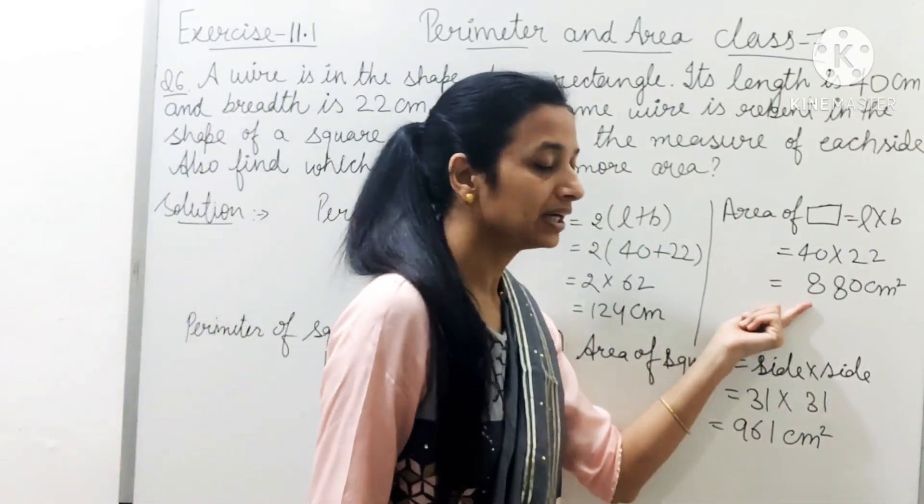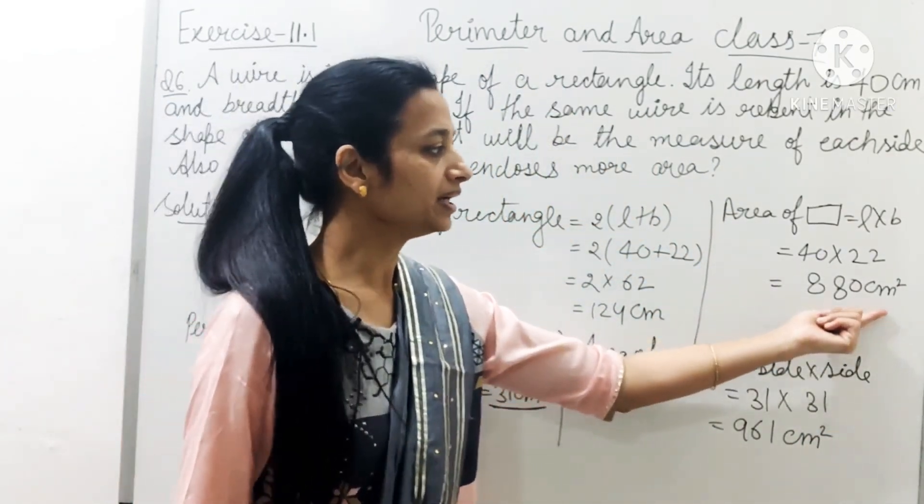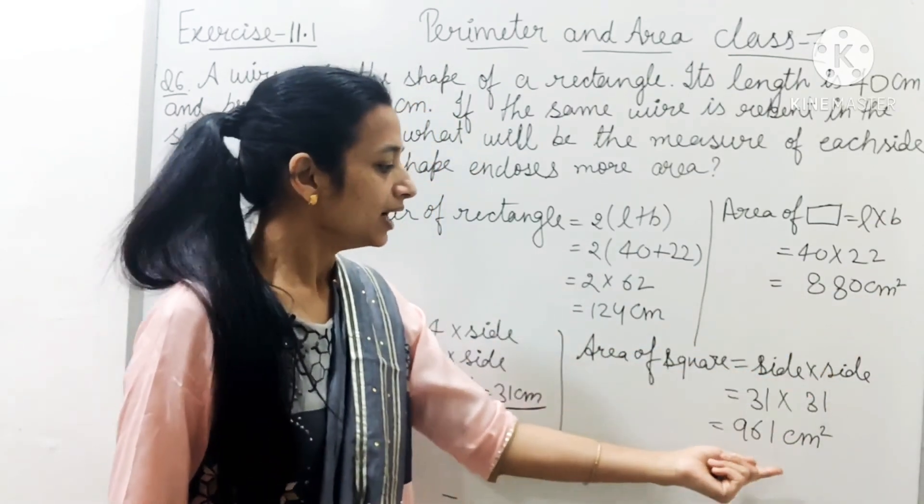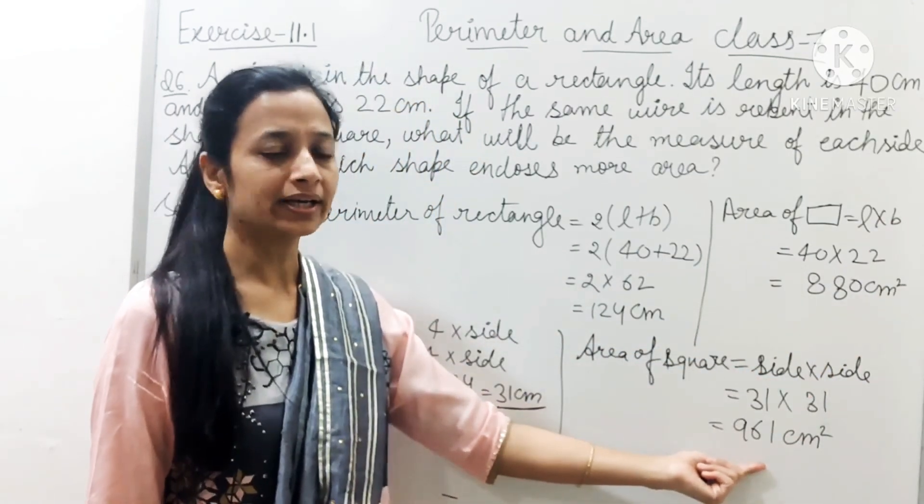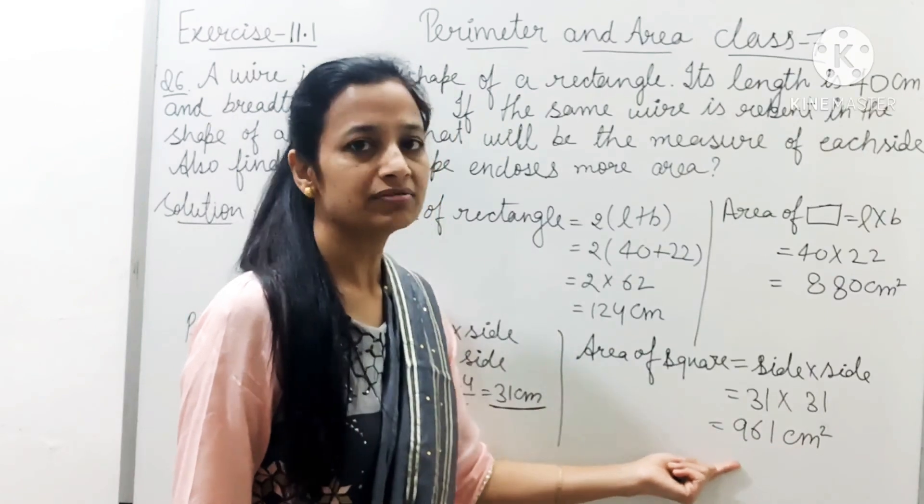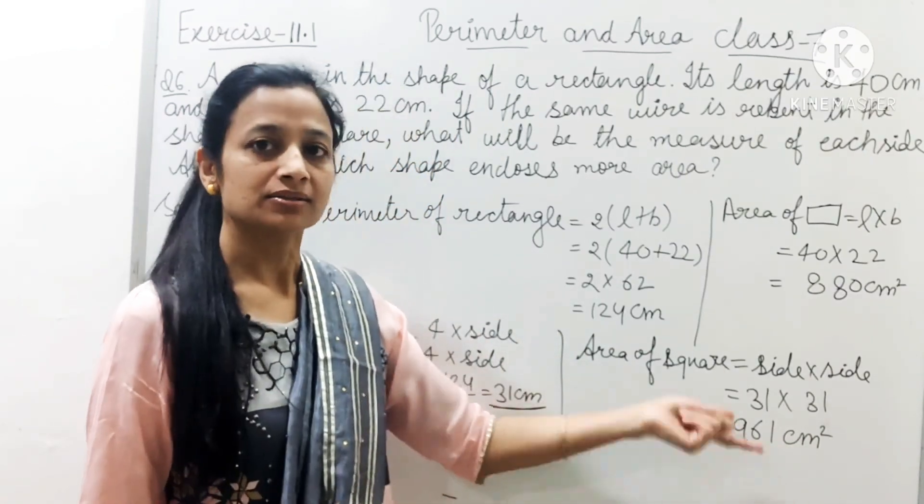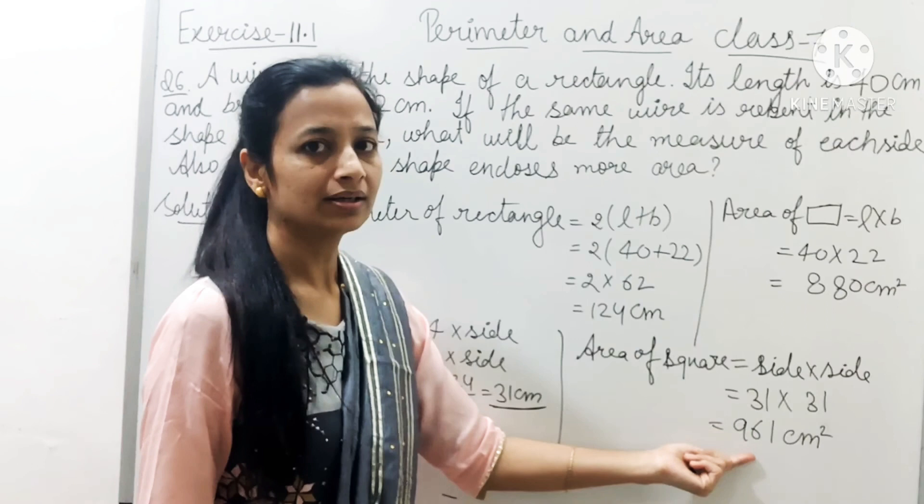So rectangle's area is 880 square centimeter and square's area is 961 square centimeter. So whose area is bigger? Square's.